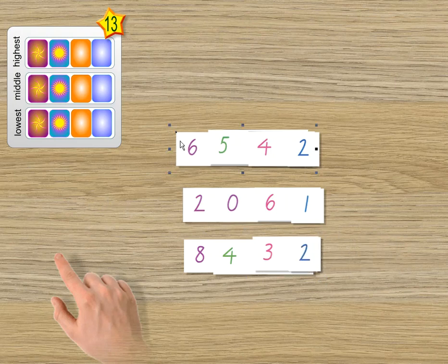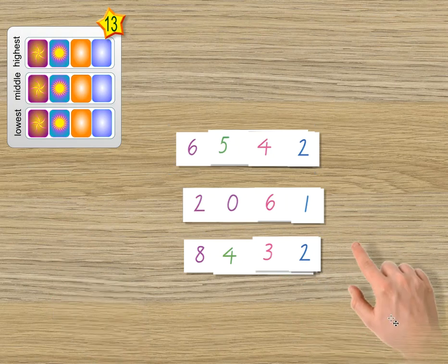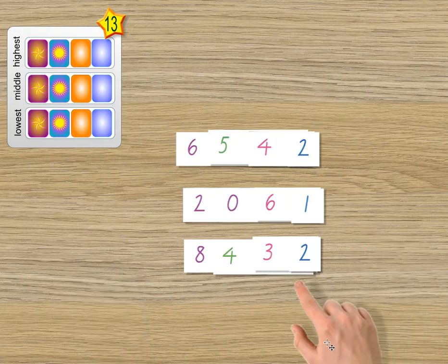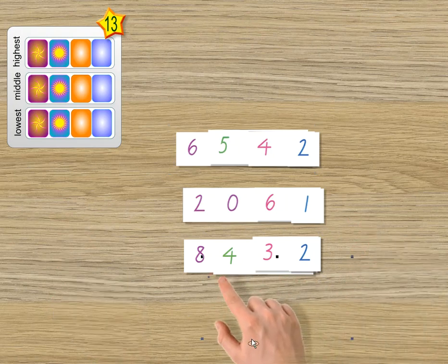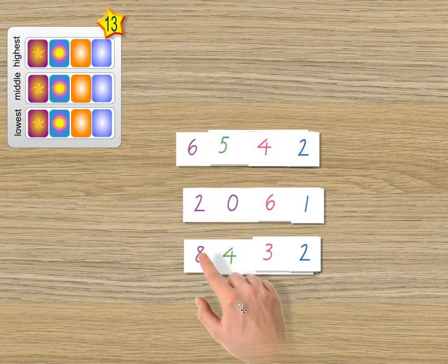Now I have to sequence these from highest to lowest. Well, to do that, first of all, I look at which one has the highest value in the thousands. This one here does.